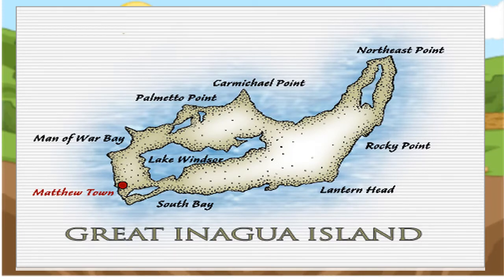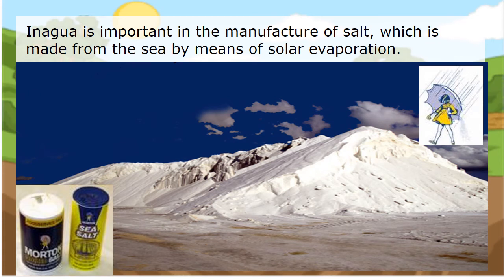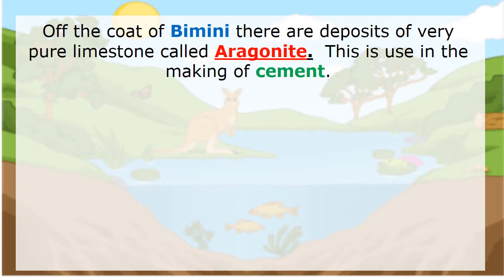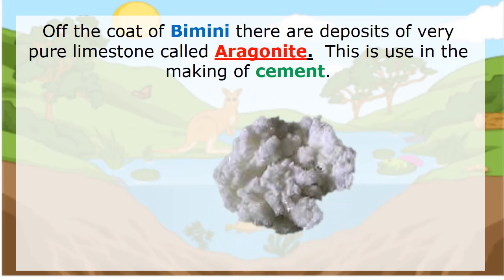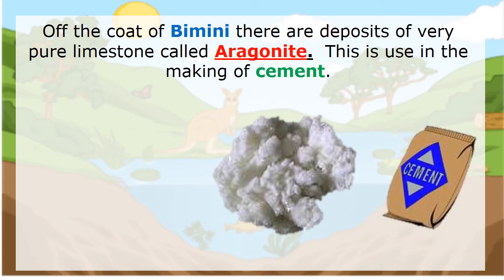Inagua — can anyone tell me what Inagua is special for? Inagua is important in the manufacturing of salt, which is made from the sea by means of solar evaporation. Off the coast of Bimini in the Bahamas, there are deposits of very pure limestone called aragonite, which is used in the making of cement.